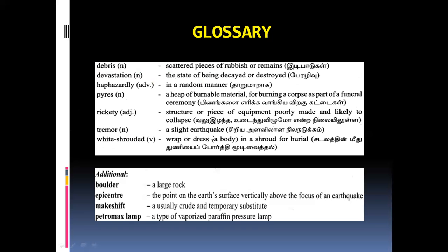Tremor is a slight earthquake. White shrouded is a wrap or dress — normally they will just cover the dead bodies with white cloth, so that is white shrouded, covered in white dress. Bouldered is a large rock. Epicentre means the point on the earth's surface vertically above the focus of an earthquake — the centre of the earthquake, as we say.